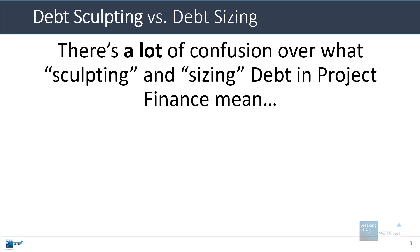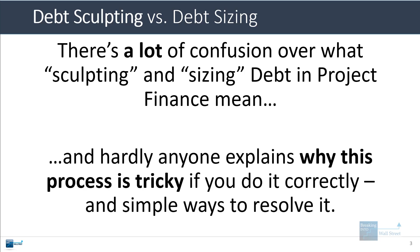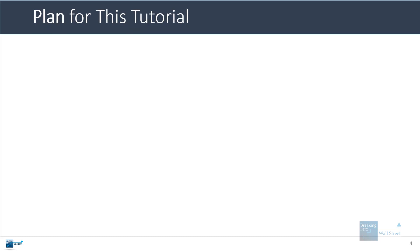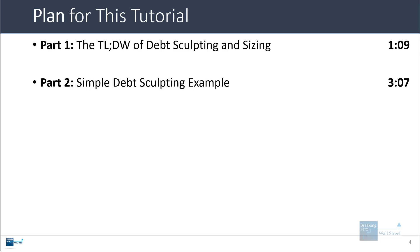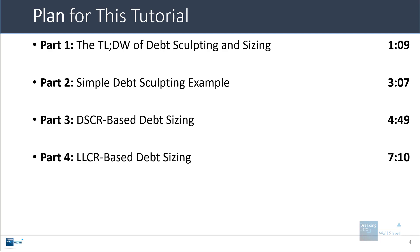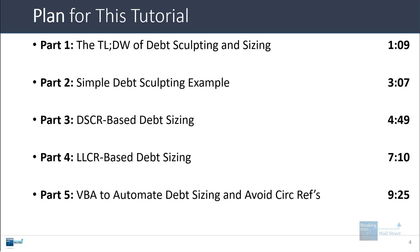There's a lot of confusion over what sculpting and sizing debt in project finance actually mean. When I was researching this topic, I found that a lot of people talk about this, but they don't really explain why the process is tricky if you do it correctly, and also some simple ways you can get around the common issues. We're going to start with a quick two or three minute version of what debt sculpting and sizing mean, then go through a simple debt sculpting example, debt sizing based on DSCR, debt sizing based on LLCR, and then some simple VBA code to automate debt sizing and avoid circular references.